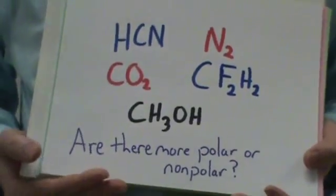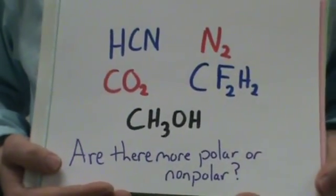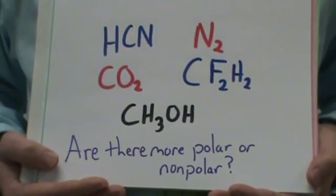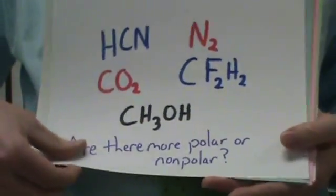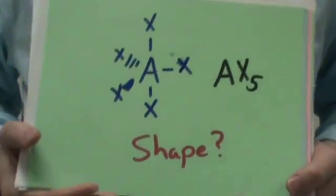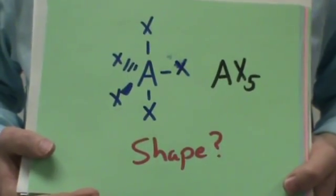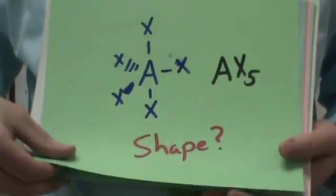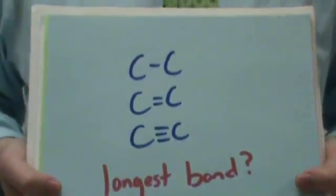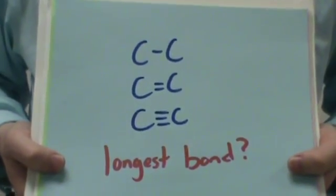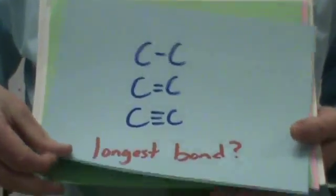Are there more polar or non-polar? There are three polar or two non. What's the shape? Trigonal bipyramidal. Which is the longest bond? Single bond.